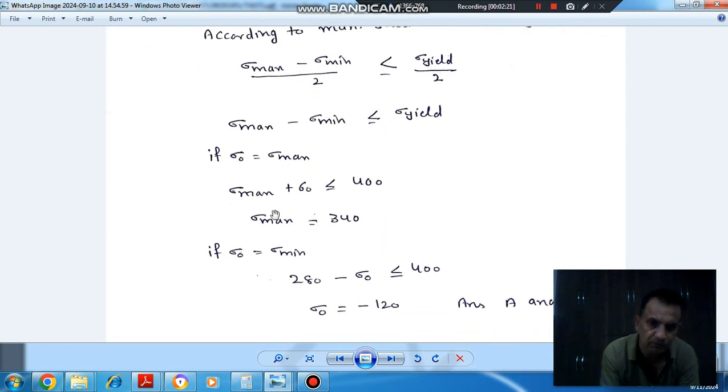If we assume sigma note as sigma minimum, then it is 280 minus sigma note less than or equal to 400.